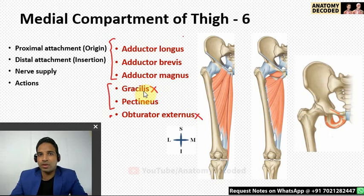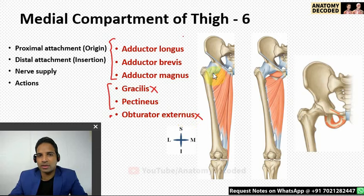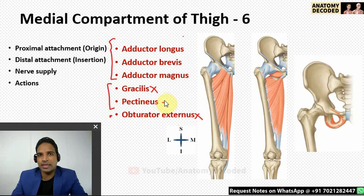The distal attachment of most medial compartment muscles is along the linea aspera, except gracilis — which attaches along the upper medial aspect of the tibia with sartorius and semi-tendinosus — and obturator externus, which attaches along the trochanteric fossa on the inner aspect of the greater trochanter. Pectineus attaches slightly above the linea aspera along the spiral line.